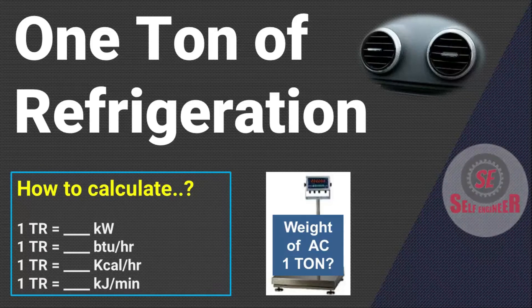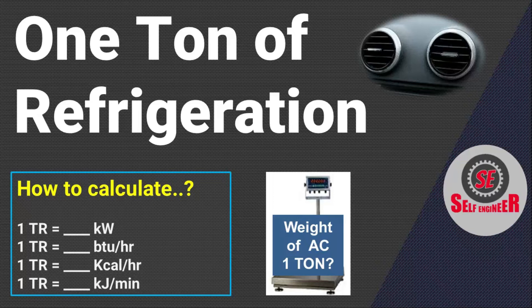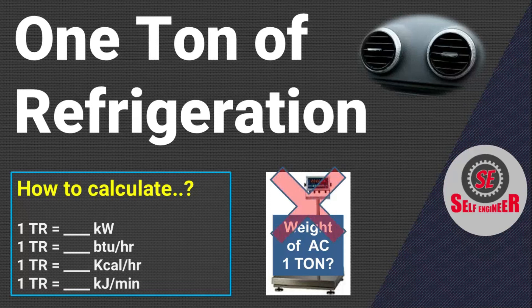Hello everyone, welcome to Self Engineer. While purchasing any refrigeration or air conditioning system, we specify it in terms of tons of refrigeration — for example, a 1.5 tons split air conditioning system. But you always wonder: what is meant by 1 tonne of refrigeration? Is it the weight of the system? No. Let us understand what is meant by 1 tonne of refrigeration, how to calculate 1TR capacity, and what are the different units of it.